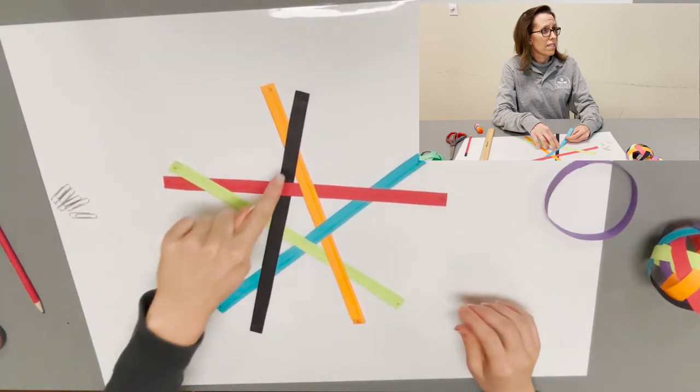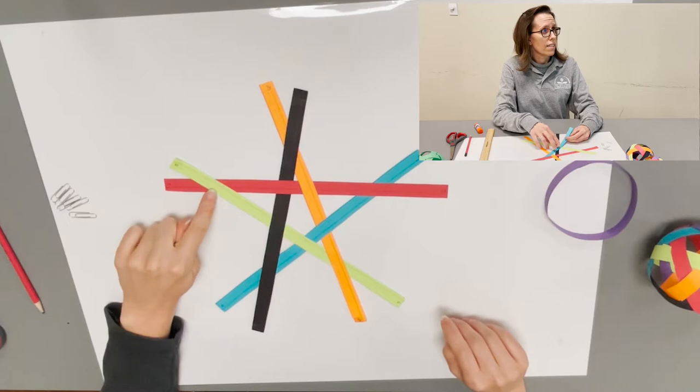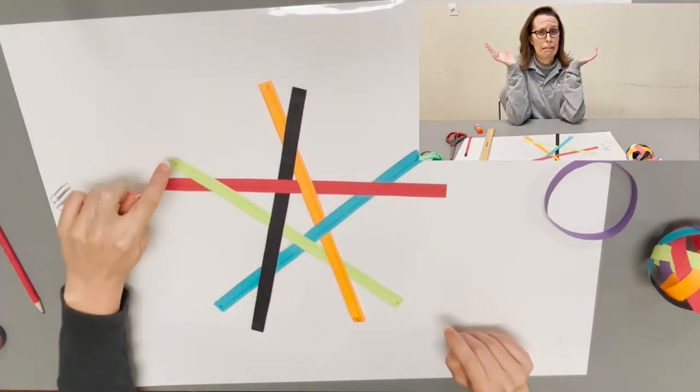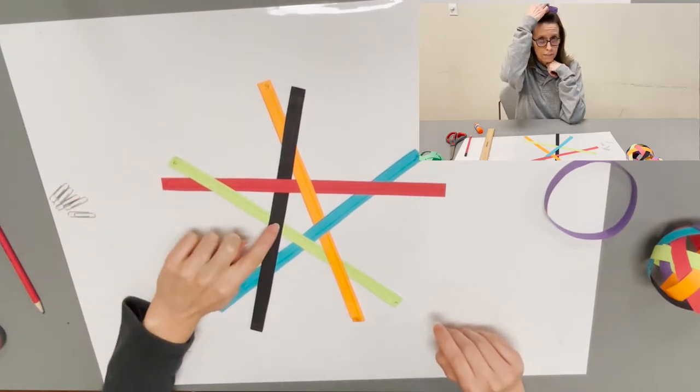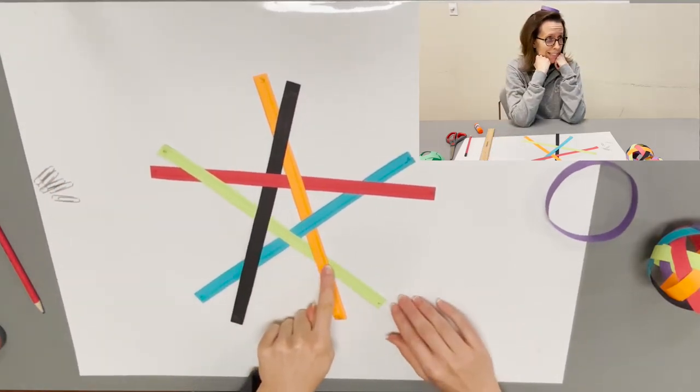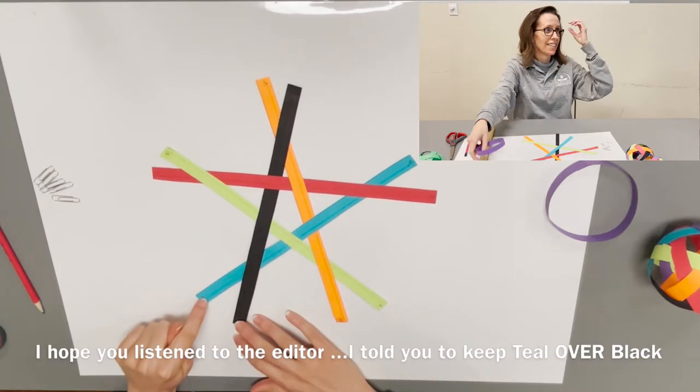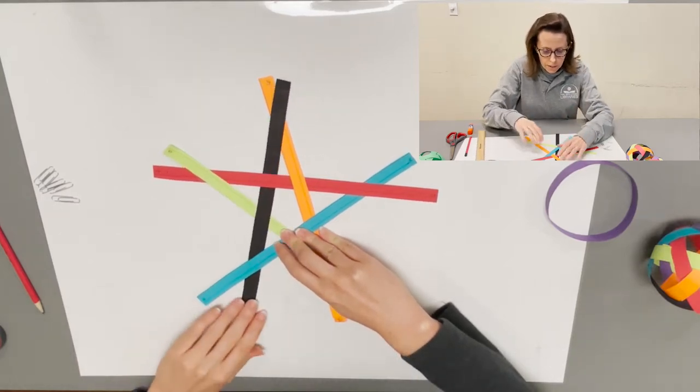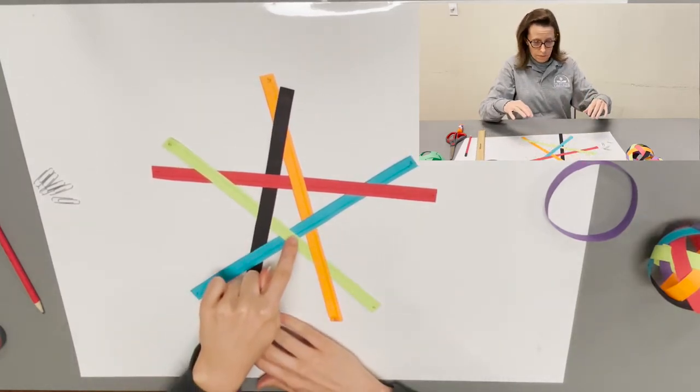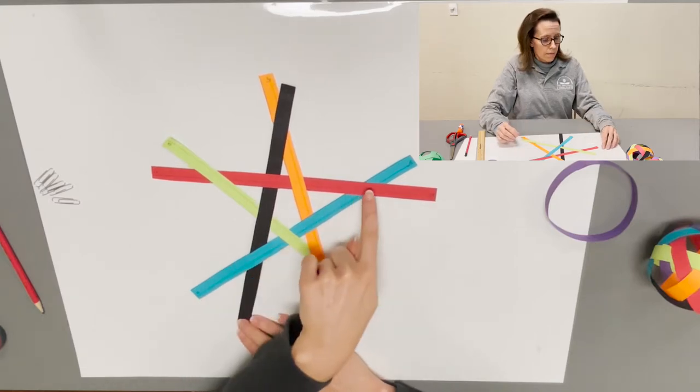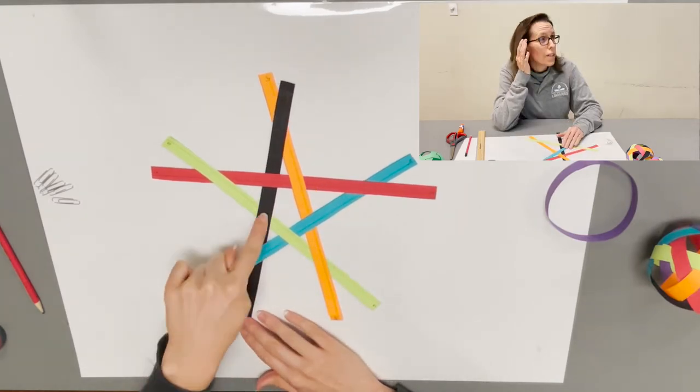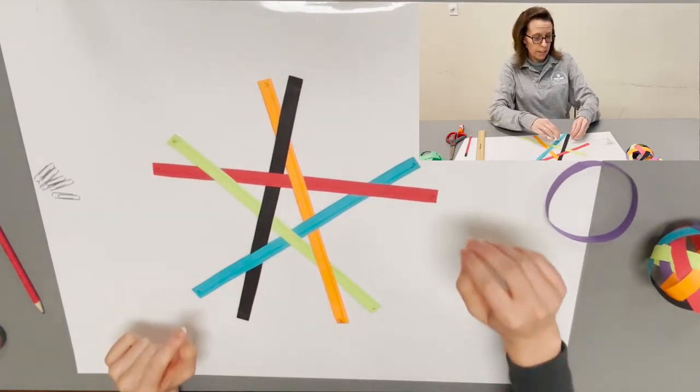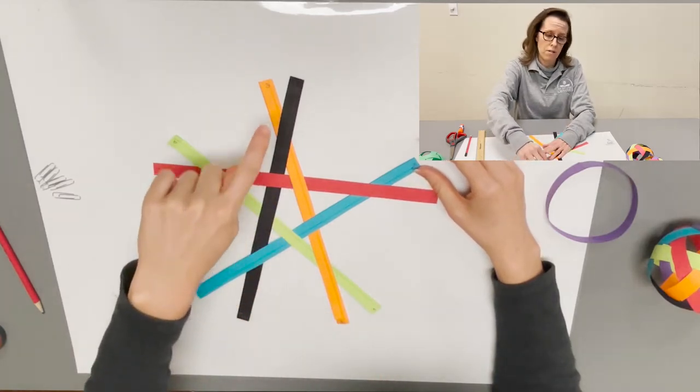Five points and with each color: we have red going under the green, over the black, under the orange, over the teal. Our green goes over the red, under the black, over the teal, and under the orange. Teal goes over the black, under the green, over the orange, and under the red.